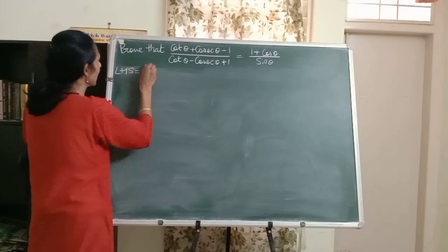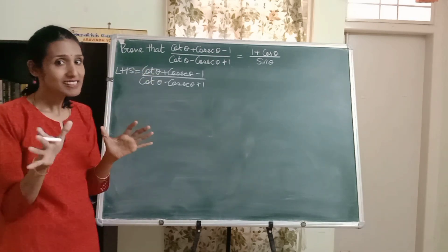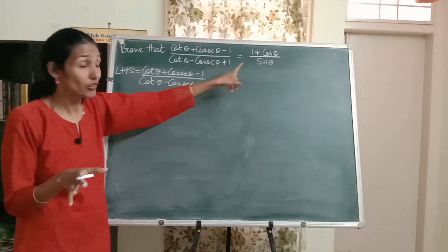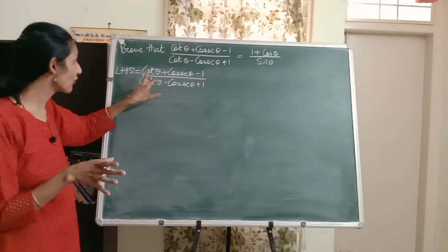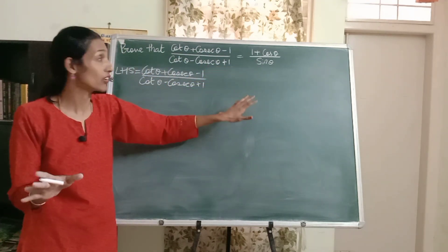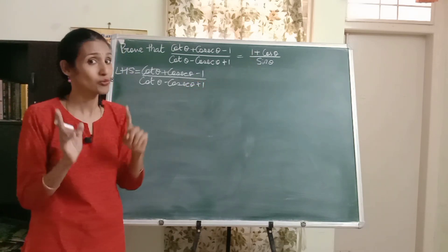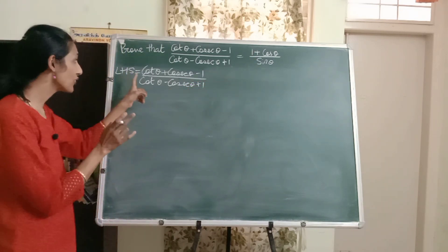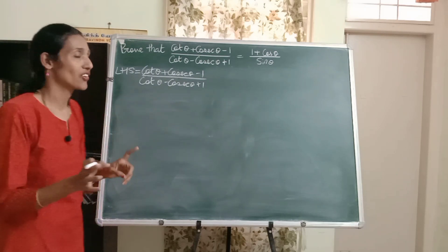So I'll just copy down the LHS now. Now let's just observe what we have and what we have to prove. We have cot and cosec, but what we have to prove doesn't have cot and cosec at all. It has only cos and sine. So I have to convert cot and cosec to cos and sine.